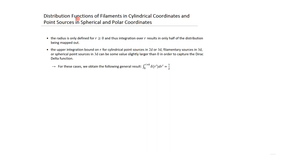For filaments in cylindrical coordinates and point sources in spherical and polar coordinates, the radius r is only defined for r greater than or equal to zero. Therefore, when integrating a Dirac delta function in these coordinate systems, we are only capturing half the distribution. The upper integration bound on r can be some value slightly larger than zero to capture the Dirac delta function, giving a result equal to one half.